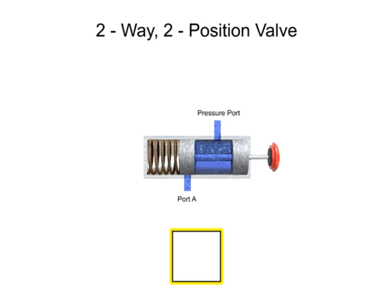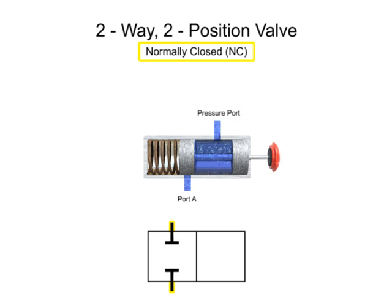It is a two-position valve, so the graphic symbol will have two adjacent boxes. This valve also has two ports. However, in the normal non-actuated position, both ports are blocked. Therefore, it is a normally closed valve.